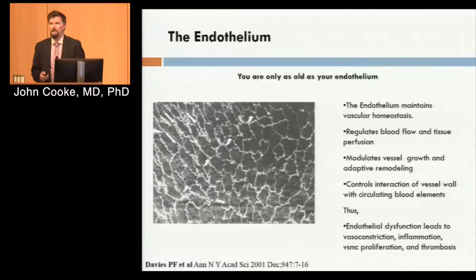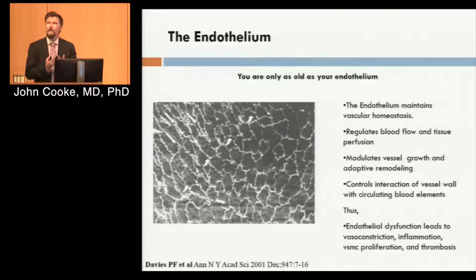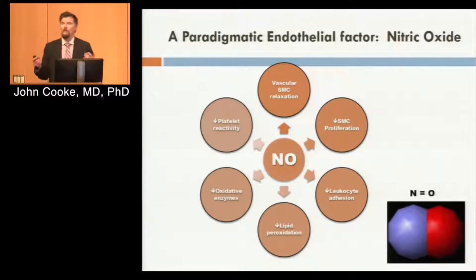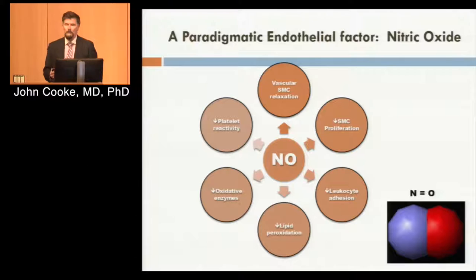Atherosclerosis begins with the endothelium — something I've been studying for almost 30 years. This is a diaphanous film of tissue, only one cell layer thick, but it exerts tremendous control over vessel tone, vessel structure, and interaction of the vessel wall with circulating blood elements. The endothelium is not only physically interposed between the blood and the vessel wall, but it secretes paracrine factors that regulate vascular homeostasis. One of those — my favorite — is nitric oxide, a gas made by endothelial cells. Nitric oxide stimulates soluble guanylate cyclase in vascular smooth muscle to induce vasodilation.